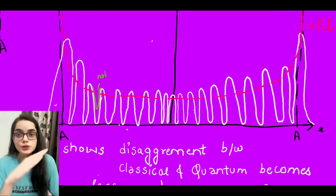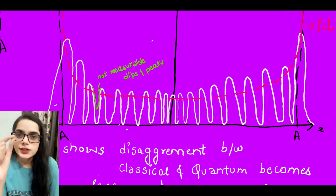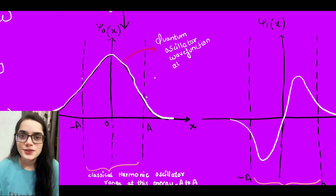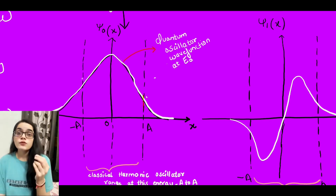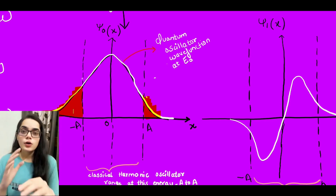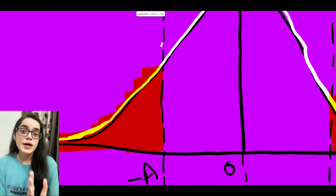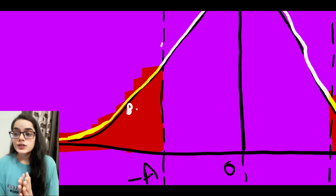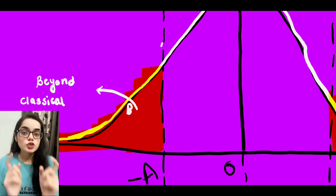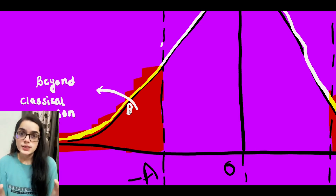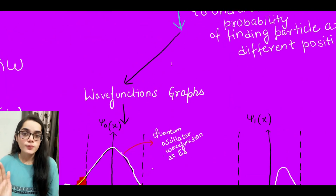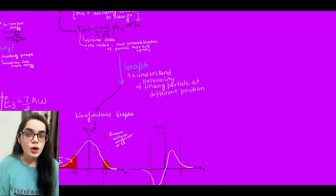This shows that the disagreement seen between classical and quantum in the ground state disappears when the energy becomes very high — as n increases, the quantum system approaches the classical system. This also shows that the energy effectively becomes continuous, because we can no longer resolve the individual peaks and dips. Furthermore, in every wave function ψ₀, ψ₁, ψ₂, ψ₃, the wave function extends beyond the classical range ±A, which you can clearly see on the graphs.